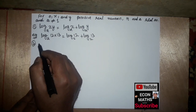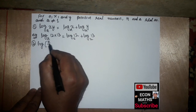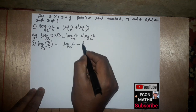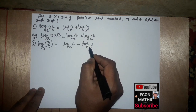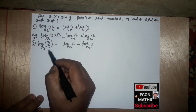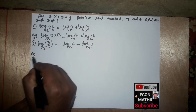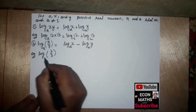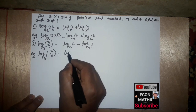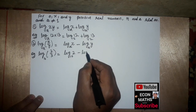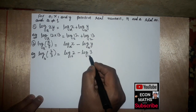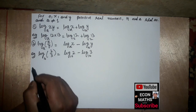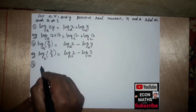The second property is: log of x over y to the base a equals log of x to the base a minus log of y to the base a. For example, log of 2 divided by 3 with base 10 can be written as log of 2 to the base 10 minus log of 3 to the base 10. Division becomes subtraction.